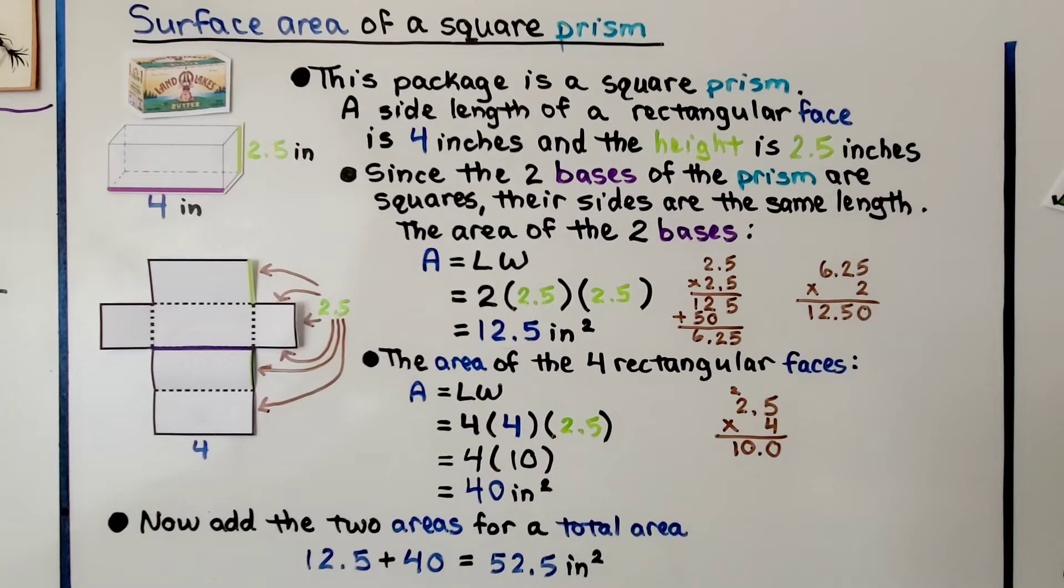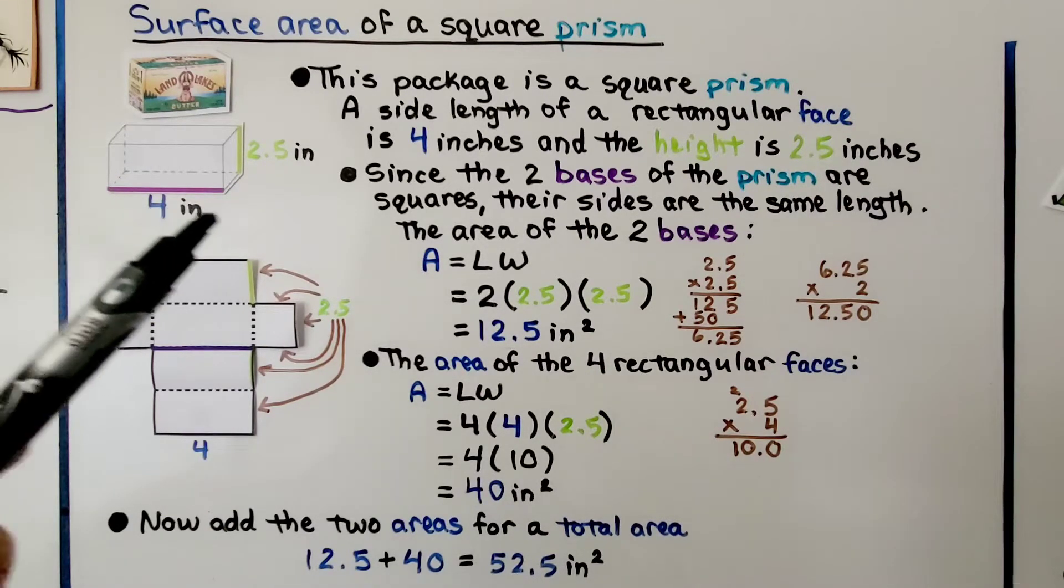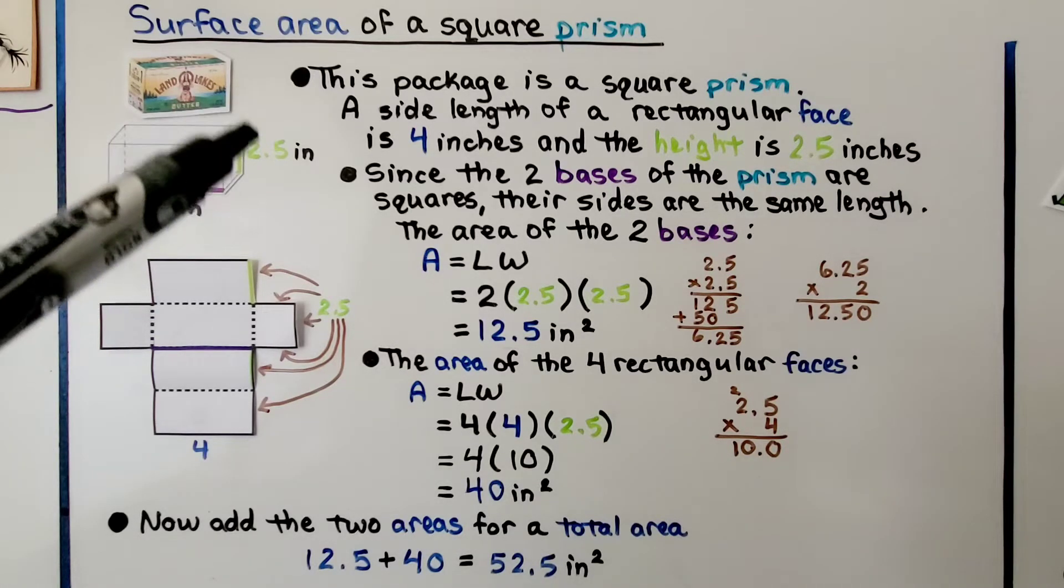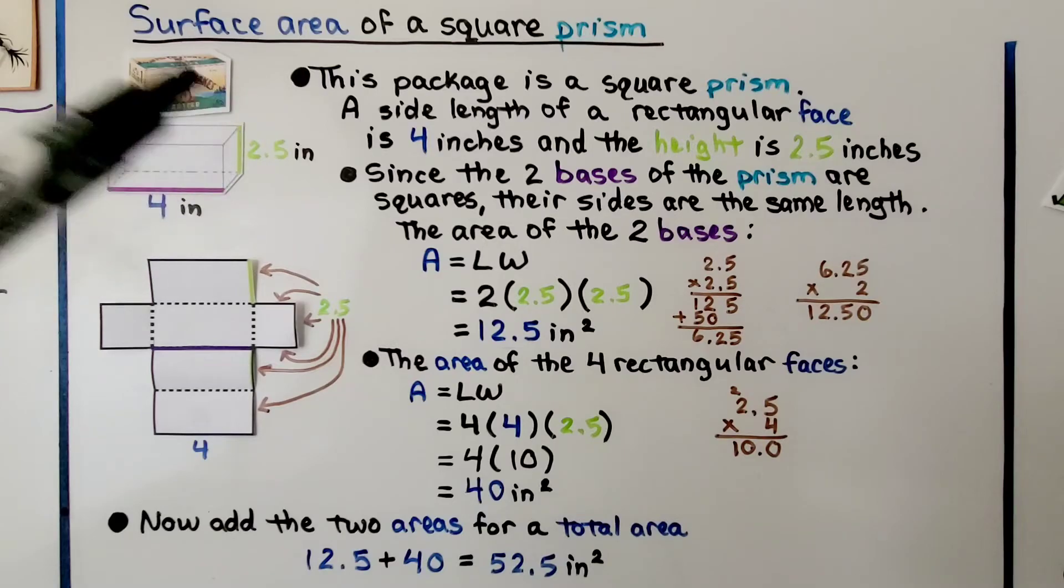We're going to find the surface area of a square prism. We have a butter box here, and this package is a square prism. A side length of a rectangular face is four inches, and the height is two and five tenths inches. That would be two and a half inches.